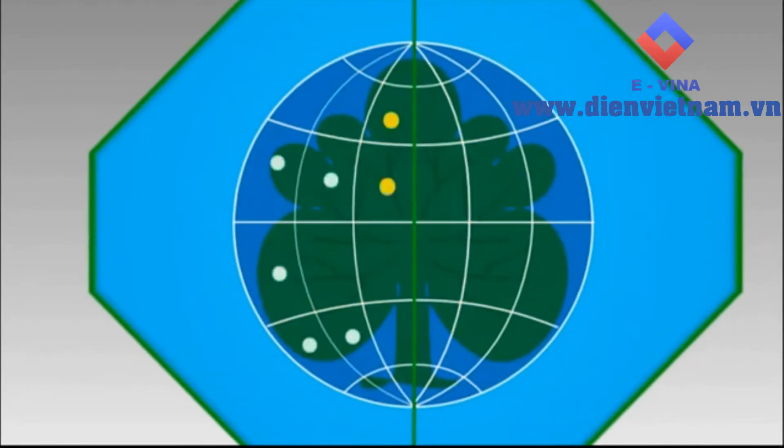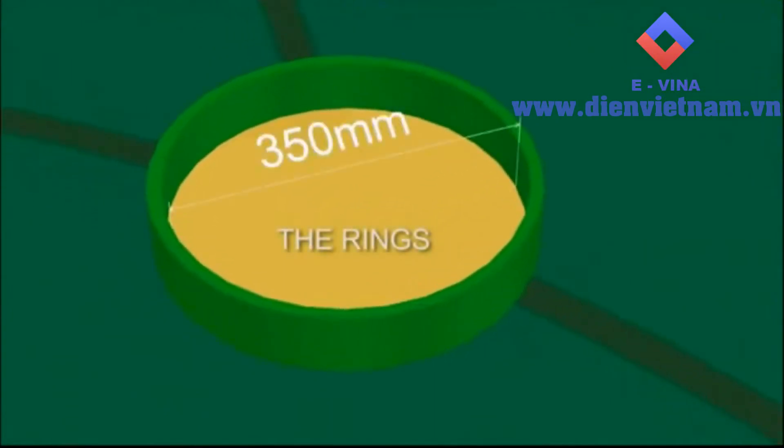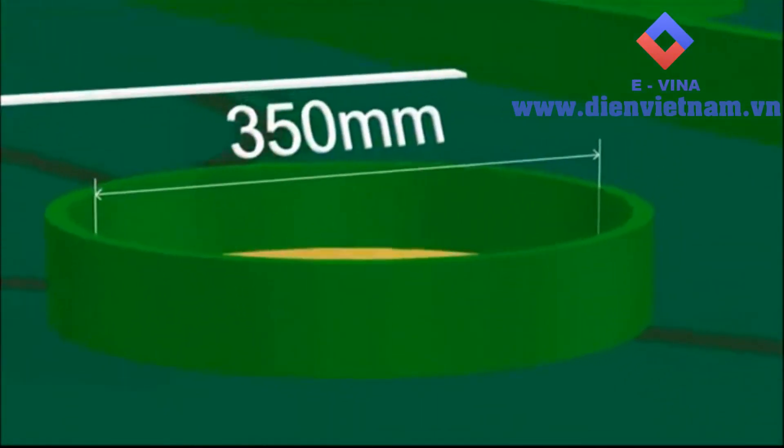There are 7 steel rings for each team to place the leaves. Each ring has dimensions of 350 millimeters in diameter and 50 millimeters in height.